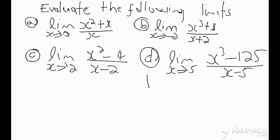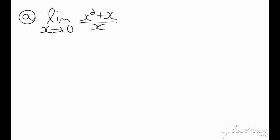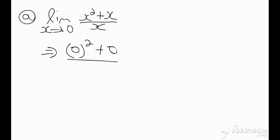We're going to start with question A. For question A, I could attempt to use direct substitution — that is normally the first approach. So if I attempt direct substitution here, replacing x with 0, I'm going to have 0 squared plus 0 over 0, which gives me 0 over 0. And of course this is indeterminate.